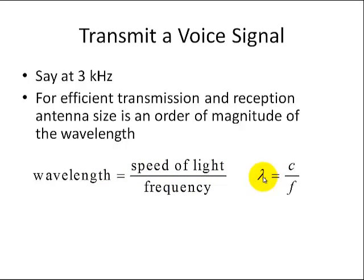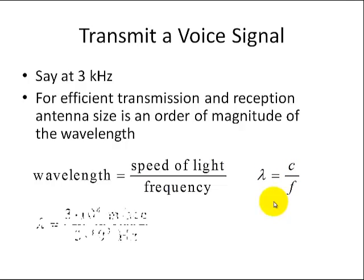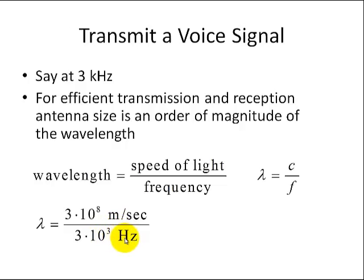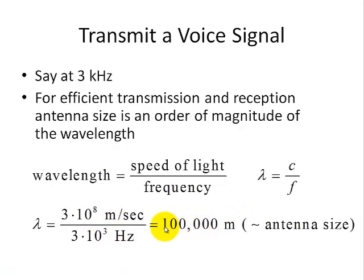Mathematically, lambda is the wavelength, C is the speed of light, and F is the frequency. So if I substitute the speed of light as three times ten to the eighth meters per second and three kilohertz as three times ten to the third hertz, this gives us a hundred thousand meter size antenna in order to transmit this three kilohertz signal. So that's the antenna size.